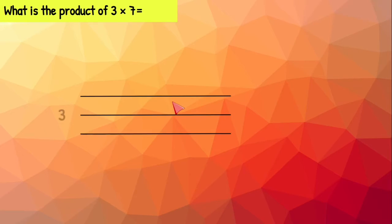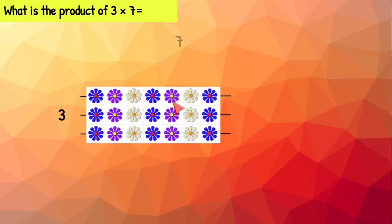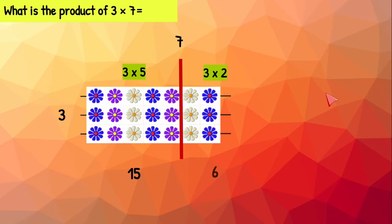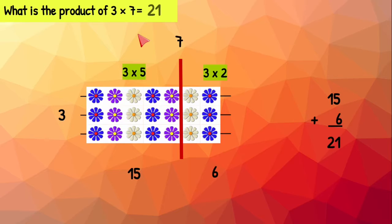Three times seven means three rows with seven flowers on each row. Let's go ahead and break the array. Now we have two smaller arrays. This one has three rows with five flowers on each row. We know three times five equals 15. Here we have three rows with two flowers in each row, which makes three times two. We know that equals six. Fifteen and six make 21. So three times seven equals 21.